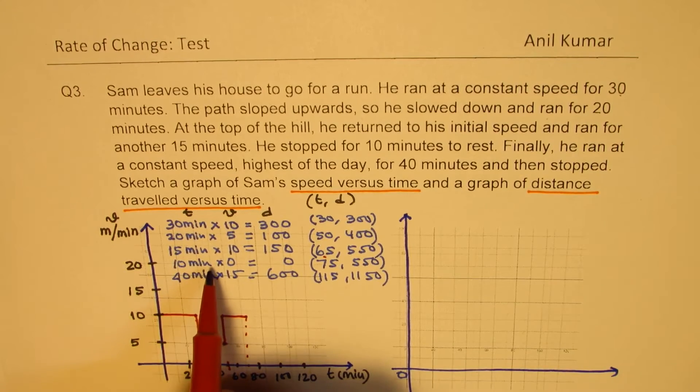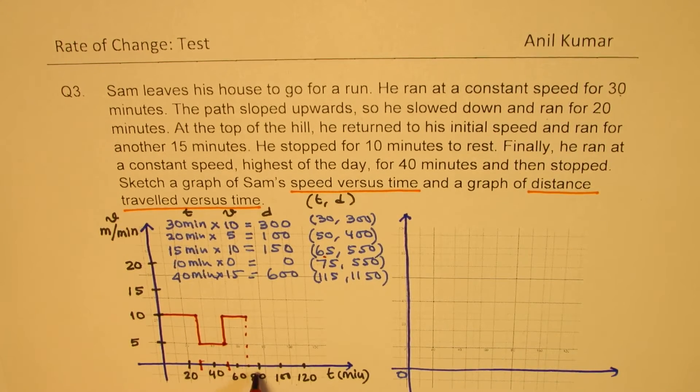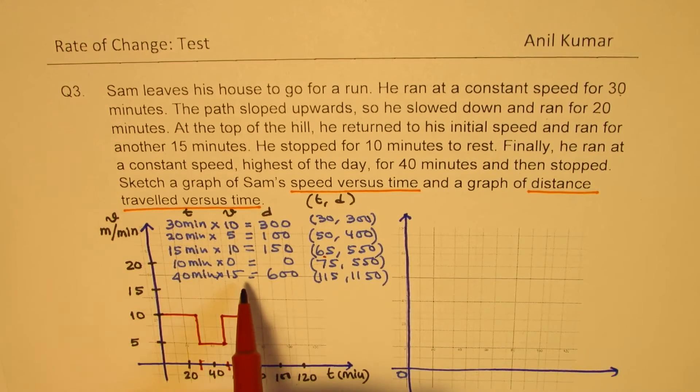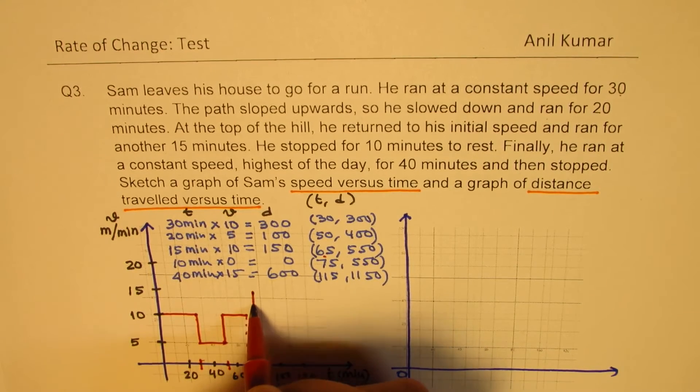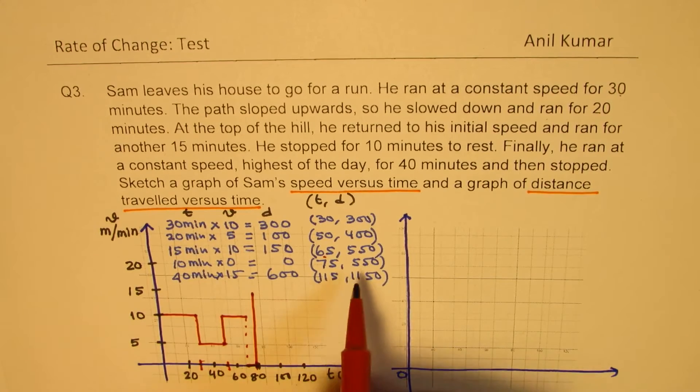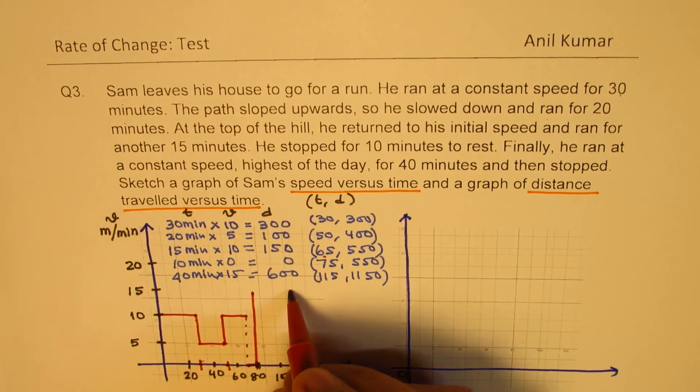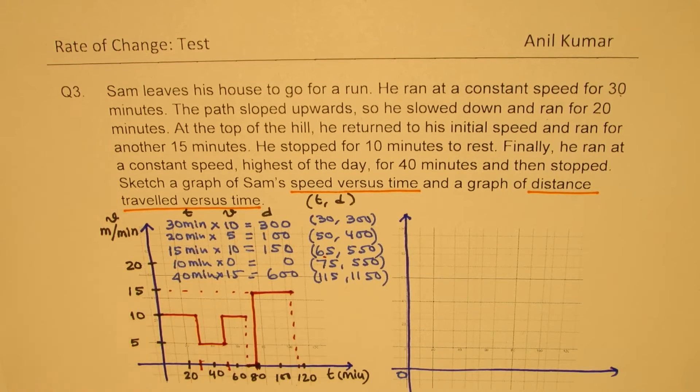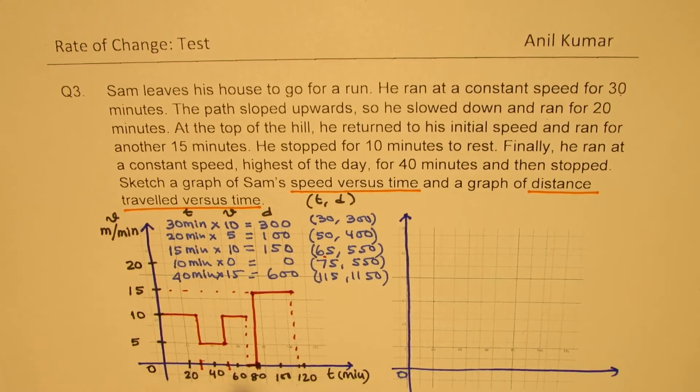So that is at 65. Now for 10 minutes he's at rest. That means 65 to 75, it is rest. Let's say this is 75 for us. And then for 40 minutes he ran at speed of 15. So then goes back and this shoots speed for 40 minutes. So time will be 115 and this is the top speed. So that is at 50. Is that clear to you? So that is how we are going to sketch velocity and time graph. So on a proper graph paper this will be more accurate.